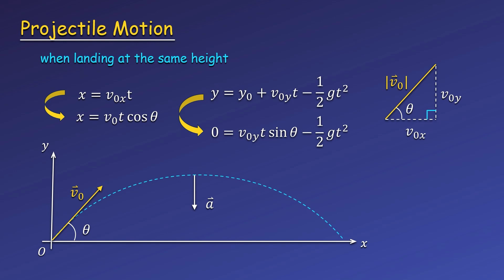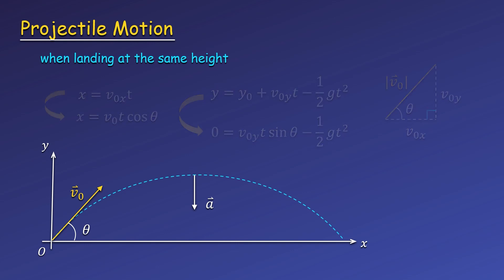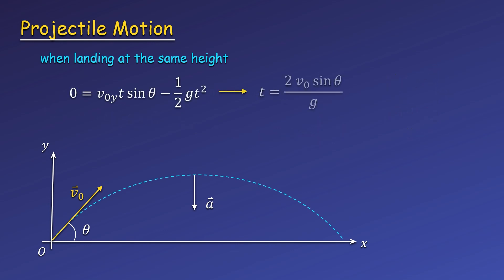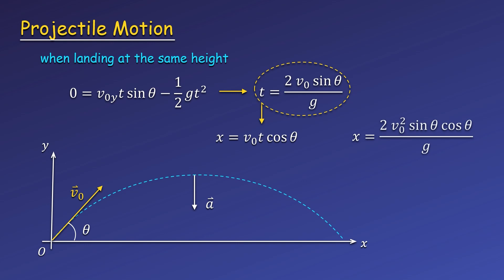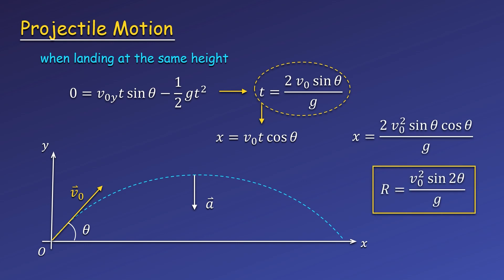We've taken the initial position to be the origin, so x-naught and y-naught are both zero. The displacement in the y direction is also zero, since the final and initial heights are the same. Now we want to solve our y equation for time, then substitute this formula for time into our x equation. We can rewrite this final equation using a trig identity, so that we only have one trig function instead of two, making it easier to use and analyze.